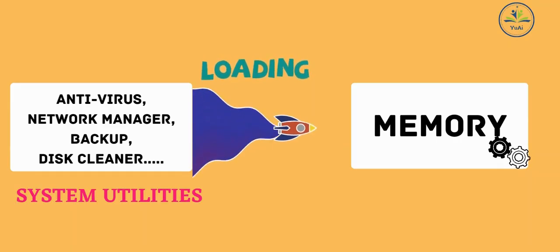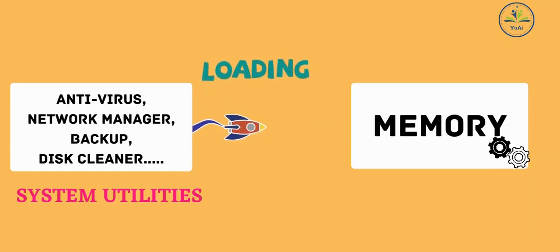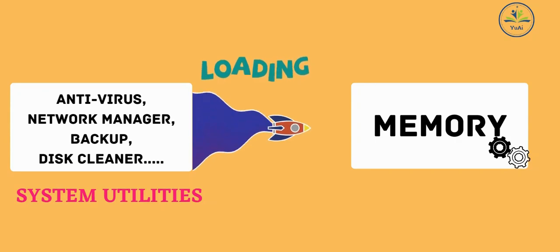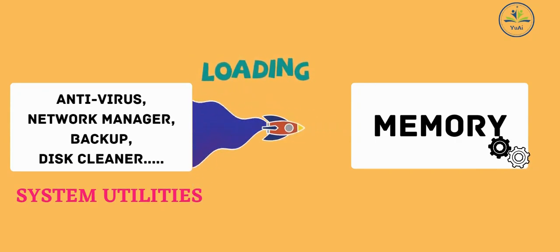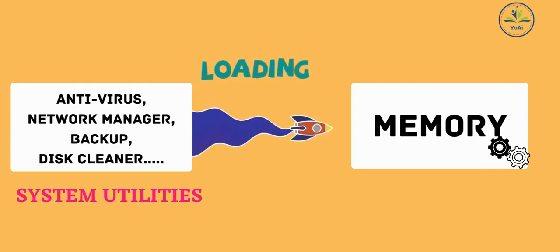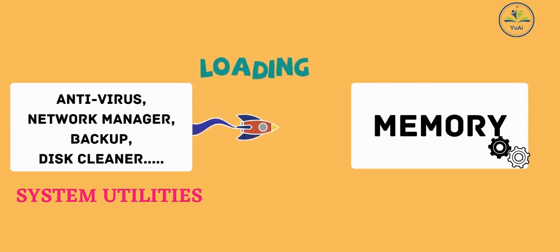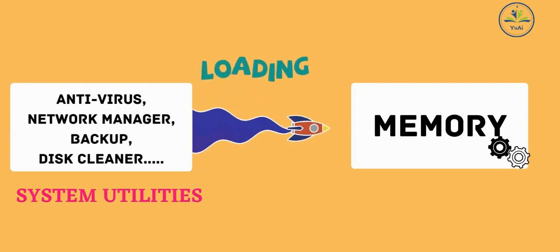Step 5: System Utilities are Loaded. In this step, the system utilities are loaded into memory. Examples of system utilities include antivirus, network manager, backup, disk cleaner, and so on. After this step, the process moves to the next step.